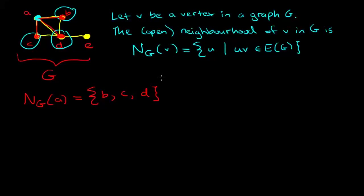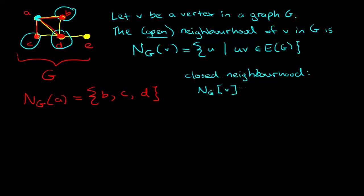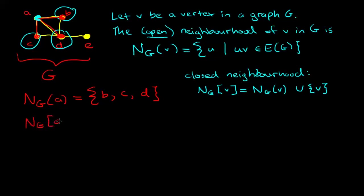You may be wondering why I've described this as the open neighborhood — that is because we do have the concept of a closed neighborhood as well. The closed neighborhood is equal to the open neighborhood union with the vertex v itself. So in our example, the closed neighborhood of vertex a is equal to {b, c, d, a} — all of the vertices in the open neighborhood plus a.